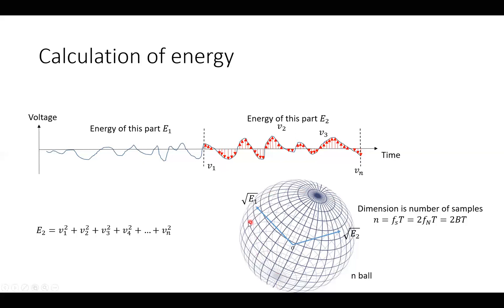And on the surface of that n-ball, we have the square root of E1 and the square root of E2. And the dimension is the number of samples. The dimension here, n, is the number of samples we are taking here.